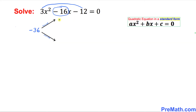And in the next step I am going to factor this negative 36 in order to get negative 16. So the possible factors of negative 36 are going to be positive 2 and negative 18. If you multiply these two numbers you get negative 36 and if you add them you get negative 16.